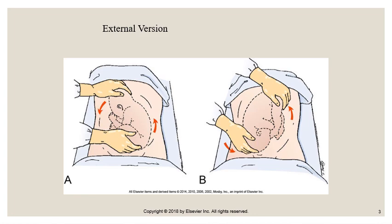This is an external version. The examiner pushes the breech portion of the baby up out of the pelvic inlet, near the false pelvis where the brim is, and then manipulates or rotates the baby to a cephalic presentation. In letter B, you can see how they're pushing the buttocks up toward the woman's diaphragm while guiding the back of the fetal head down toward the pelvis.